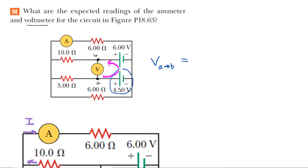Because we're moving counterclockwise, we would be moving from the positive plate downward to the negative plate. When you move in that direction from a positive plate to a negative plate, you're going to be losing electrical potential. That will be a negative change in electrical potential. We would write that as negative 4.5 volts.